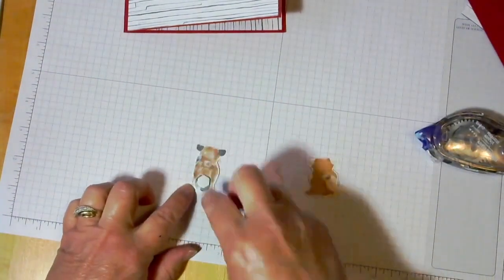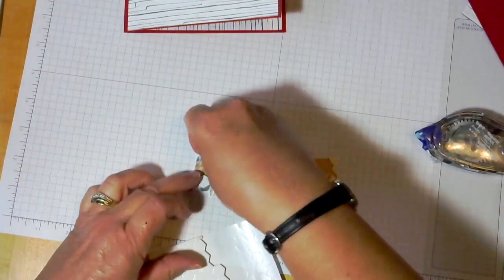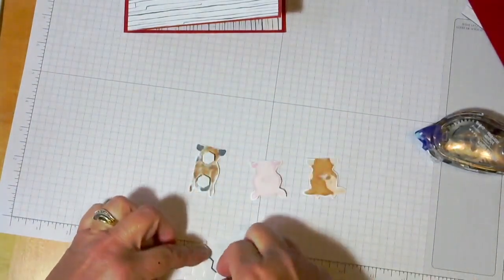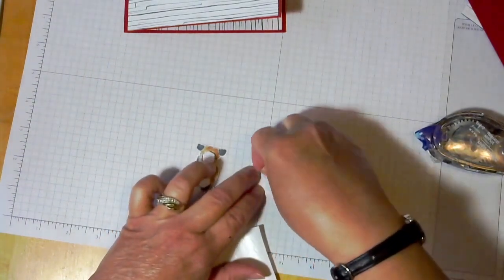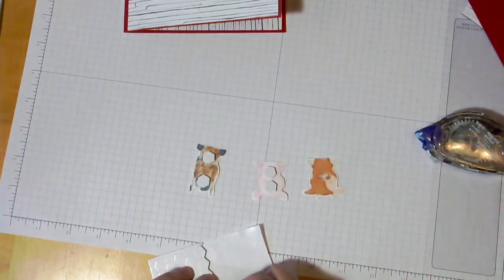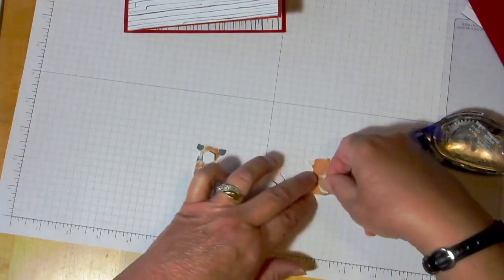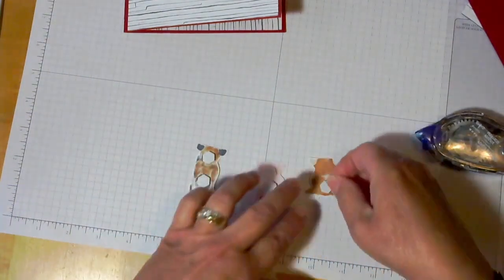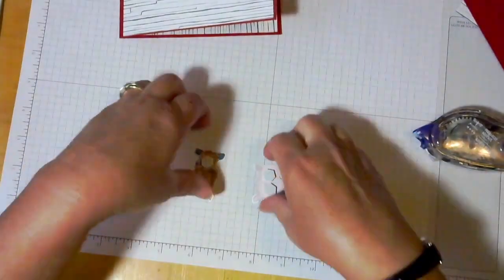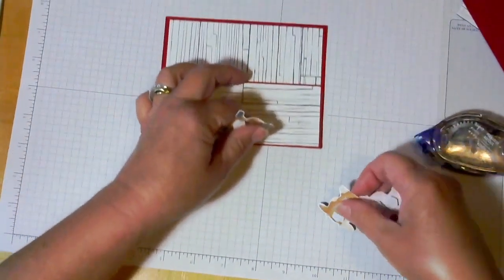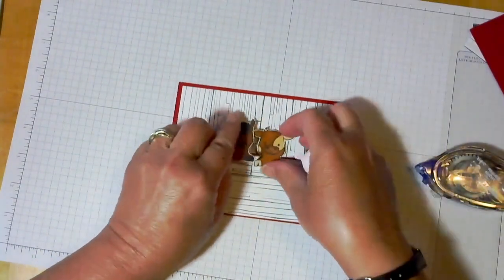So then we're going to take some dimensionals. And leave a little bit of room at the bottom. Because you're going to want to kind of leave it so that the bottom can flip to kind of hook the barn door on it. So then you're going to decide.